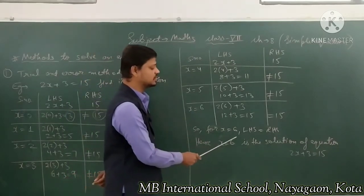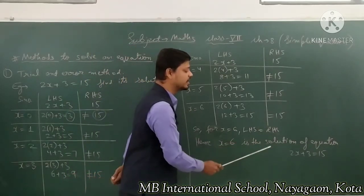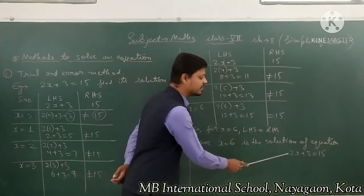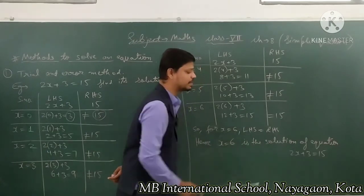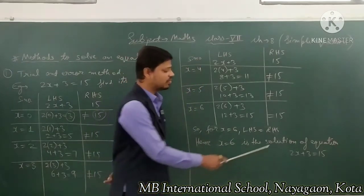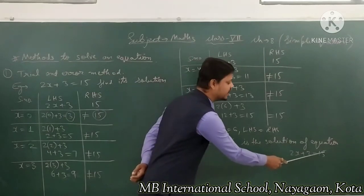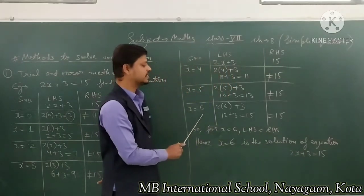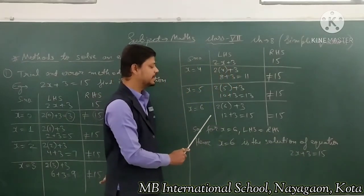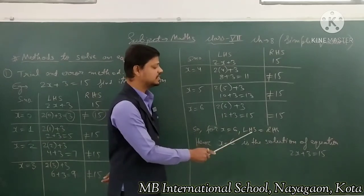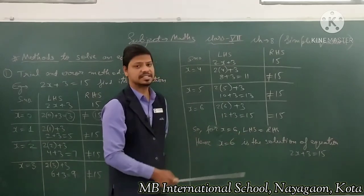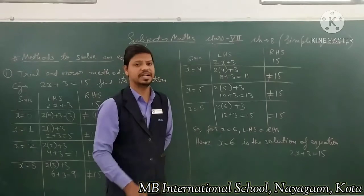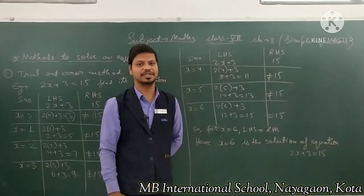Hence, x = 6 is the solution of the equation 2x + 3 = 15. The value of x for which LHS equals RHS is called the solution of that equation. Hope you understand this video. Thank you.